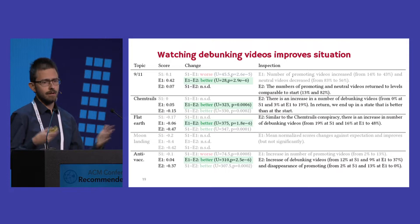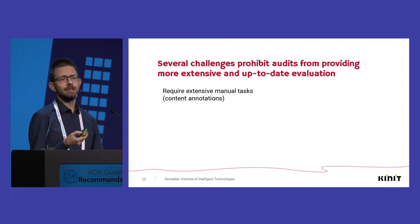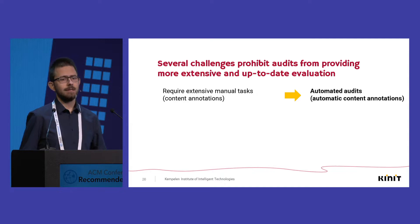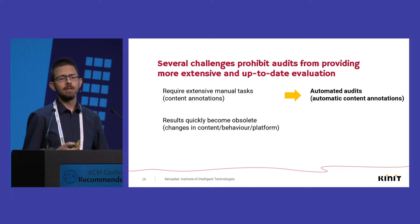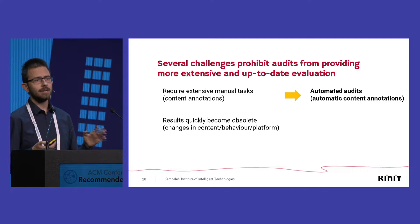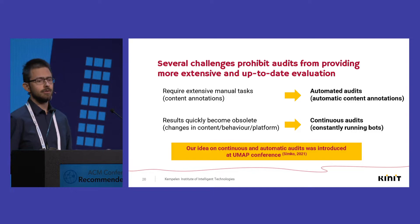For next steps, we see several challenges that prohibit more extensive and up-to-date evaluations. Audits require extensive manual tasks which limit their scalability — tasks like automatic content annotations or automatic seed video selection need to be automated. Additionally, results of audits quickly become obsolete, as they are done as snapshot audits only applicable at the time of the audit, since platforms constantly change content, behavior, and even user interfaces. To provide more up-to-date evaluations, we need continuously running bots — continuous audits. This idea was introduced in our paper at the Web Conference, so please check it out.